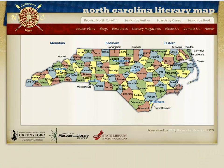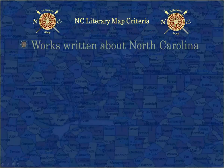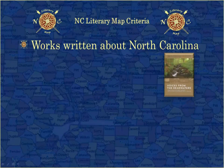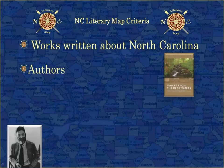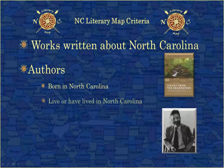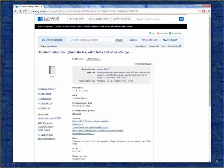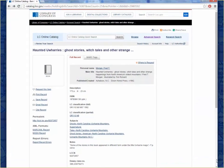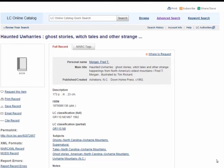Our selection criteria is very broad and inclusive. The map focuses on works written about North Carolina and authors who were born in North Carolina, those who currently live or have lived in North Carolina, or have written about the state. The author must also have had at least one publication catalogued by the Library of Congress.